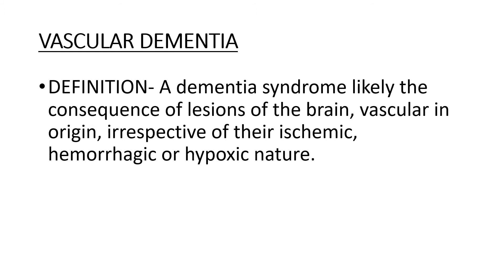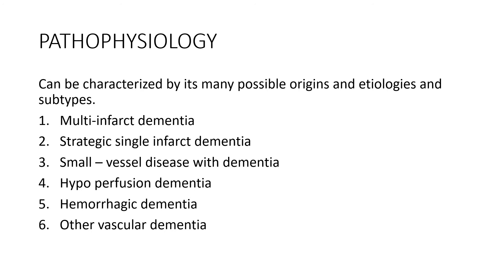The second major cause of dementia is vascular dementia, defined as a dementia syndrome likely the consequence of lesions of the brain of vascular origin, irrespective of whether ischemic, hemorrhagic, or hypoxic, and can be due to thrombotic events, infarct, or hemorrhage. Essentially, vascular dementia is a condition in which strokes cause the patient to suffer from dementia. Its pathophysiology can be characterized by many possible etiologies and subtypes including multi-infarct dementia, strategic single infarct dementia, small vessel disease with dementia, hypoperfusion dementia, hemorrhagic dementia, and other vascular dementias.